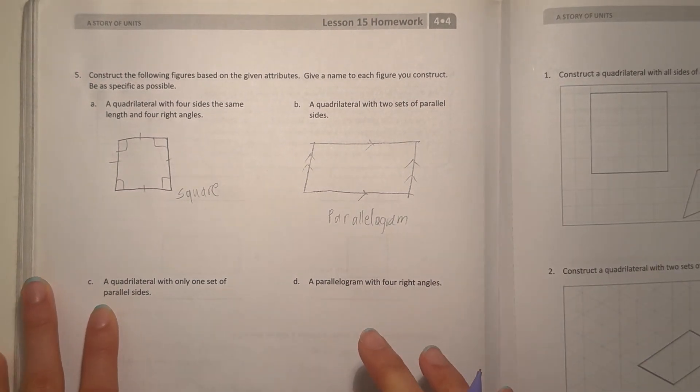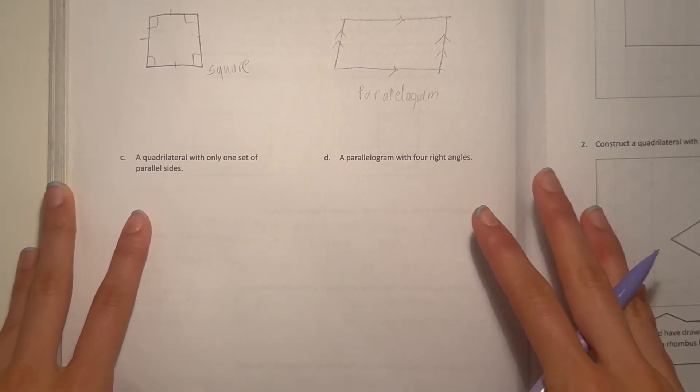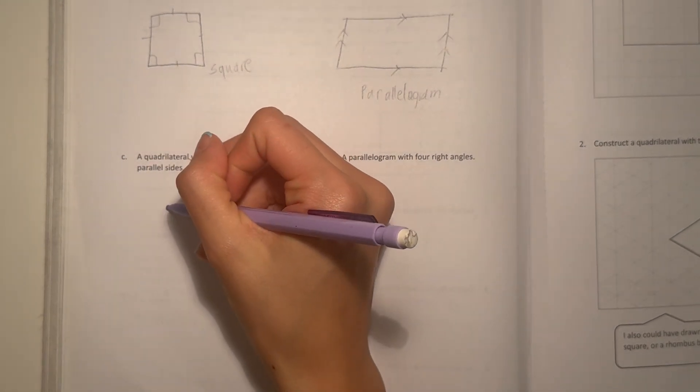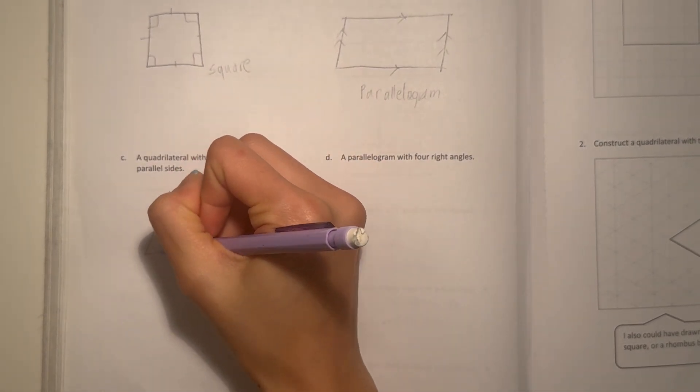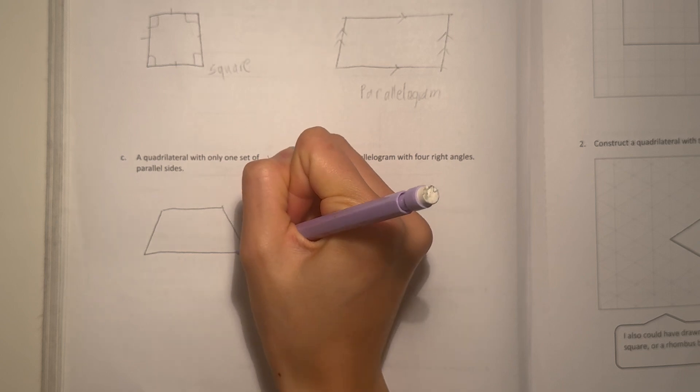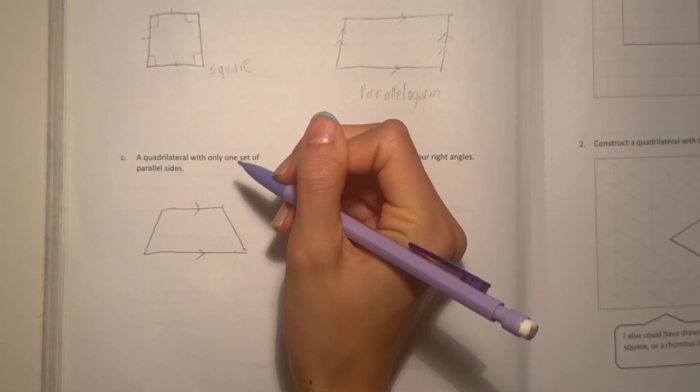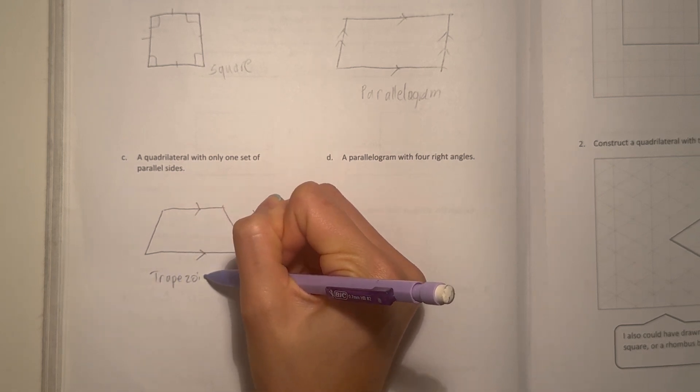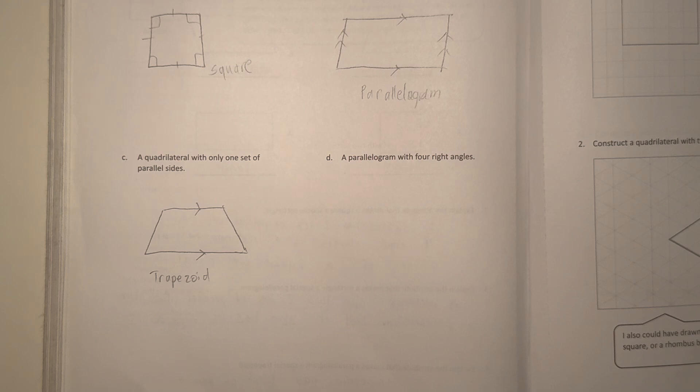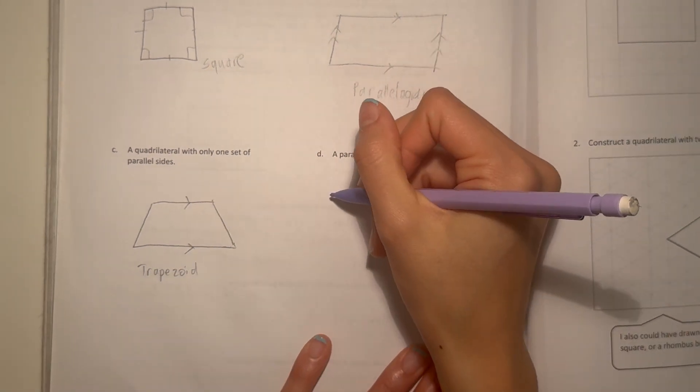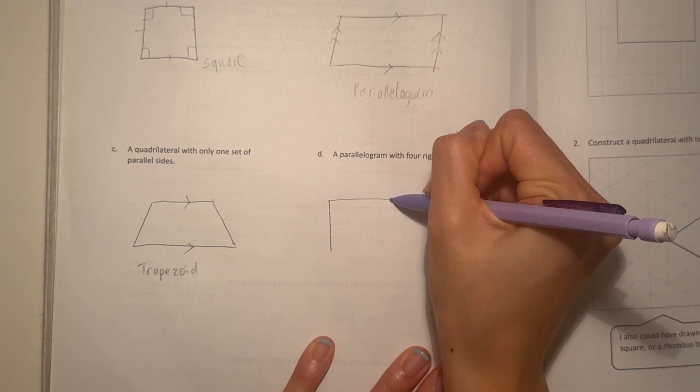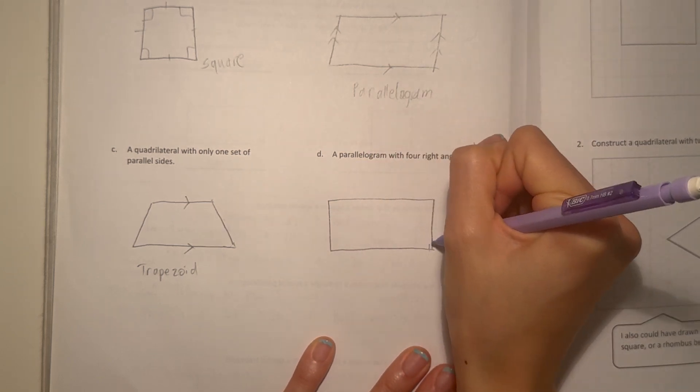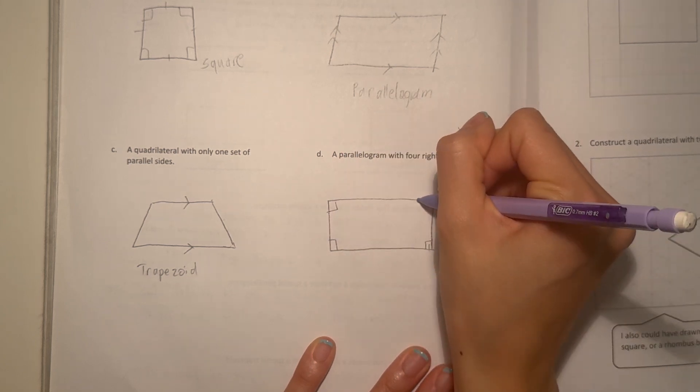Alright C, a quadrilateral with only one set of parallel sides, so that is a trapezoid. Just draw a trapezoid because these two sides are parallel. Trapezoid. And for D, a parallelogram with four right angles. Parallelogram means two sets of parallel lines just like a rectangle, two sets of parallel lines with four right angles.